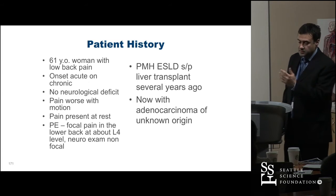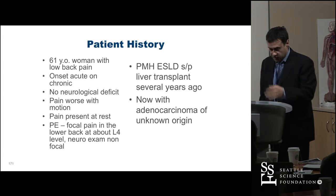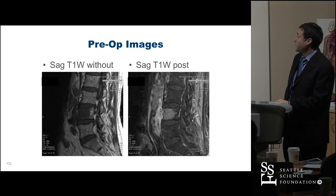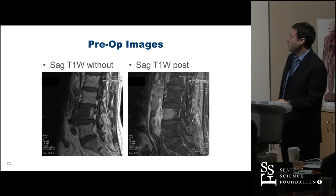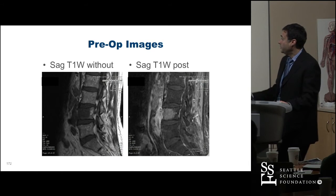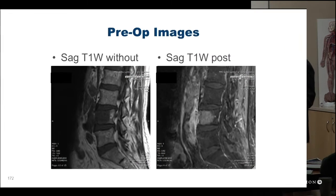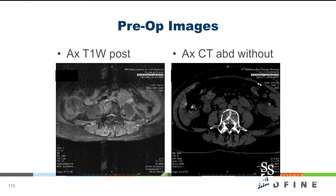Past medical history: end-stage liver disease years ago, got a liver transplant, and now has adenocarcinoma of unknown origin — also an unfortunate case. You can see the L4 vertebral body tumor-infiltrated, with breakthrough of the cortex on the lateral aspect, retroperitoneal lymph nodes incidentally, and soft tissue component extending outside of the vertebral body.